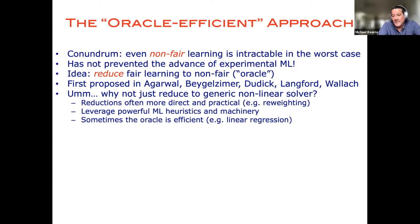And in some cases, this oracle or subroutine might actually be efficient already, and then the overall algorithm would be efficient as well, linear regression perhaps being the most obvious case. And as I'm going to show you briefly in the talk, the central tool behind these reductions or algorithms that are bootstrapping on top of some non-fair learning subroutine is in fact game theory.